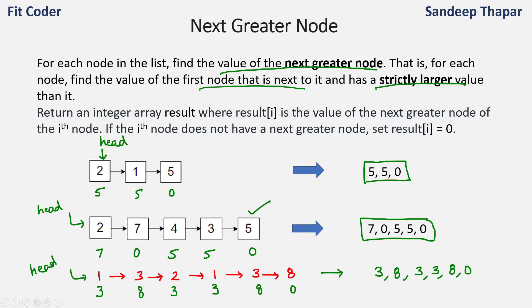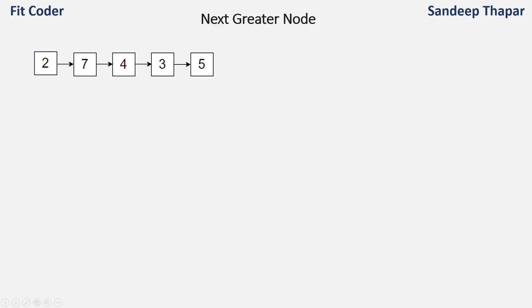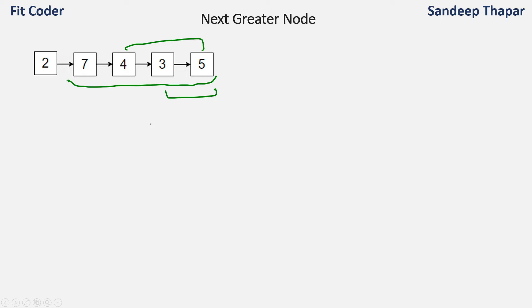Now once we've understood the problem, let's see how we can solve it. One trivial implementation is that for each node, we traverse all the nodes to the right of it and find the next greater node. For example, for 2 we traverse 7→4→3→5; for 7 we traverse 4→3→5; and so on. The issue is that if the linked list is huge, we might need to traverse many elements. In this case the time complexity can reach O(n²), because for each node we traverse until we find the next greater node.